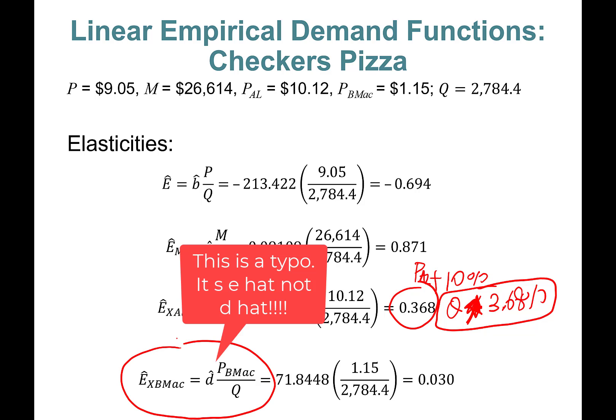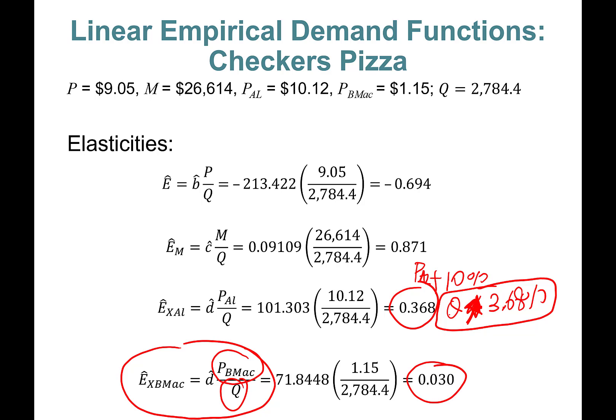And the last one is also another substitute example. E-hat times price of Big Mac divided by quantity. You calculate this—this is what you're going to find. Again, if the price of Big Mac goes up by one percent, quantity demanded for Al's Pizza will go up by 0.03 percent. So that's very weak. Even if the price of Big Mac doubles—100 percent increase—sales in Al's Pizza will go up by only three percent.